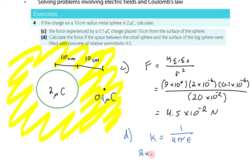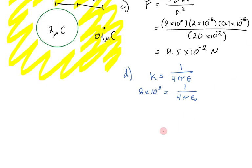9 times 10 to the ninth, is 1 on 4 pi epsilon naught, which is the permittivity of free space.